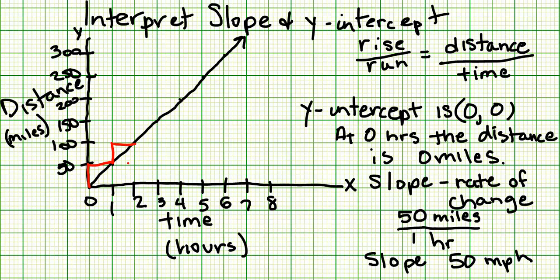This time we're rising 50, 100, 150, and we're running 1, 2, 3. So it looks like our slope is different, but if we reduce this, 150 over 3 is again 50 miles per hour. So because our graph is a straight line - it's linear - our rate of change has to remain the same.